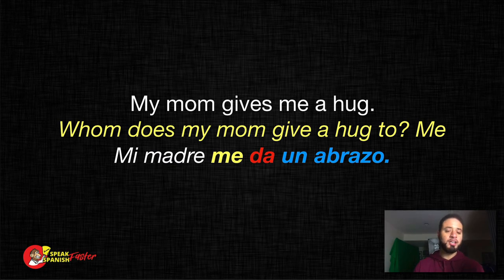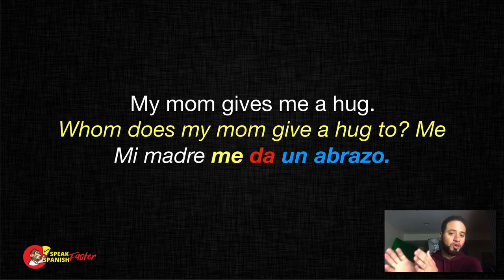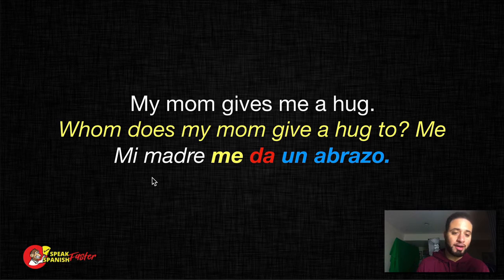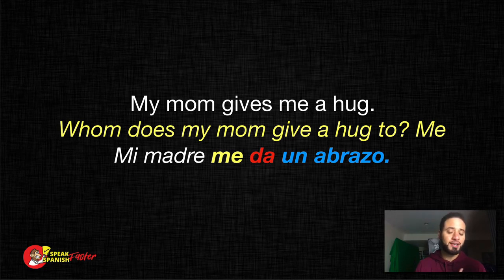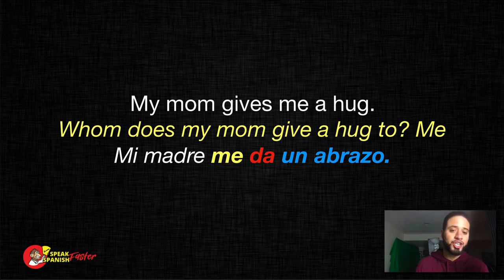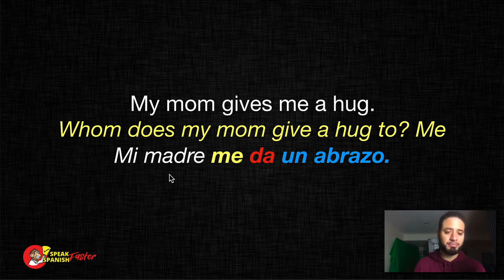'My mom gives me a hug.' Who does my mom give a hug to? Me. I'm the indirect object. The action is gives, what is she giving — a hug — that's the direct object, and for whom — me. So: mi madre me da un abrazo. As you can see: mi madre is the subject, da is the verb, un abrazo is the direct object, and me is the indirect object. One important rule: the indirect object always comes before the conjugated verb.